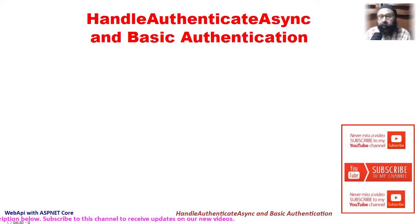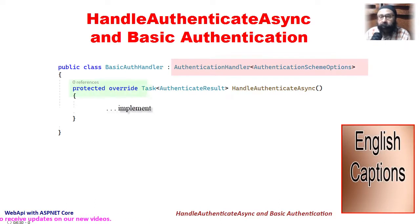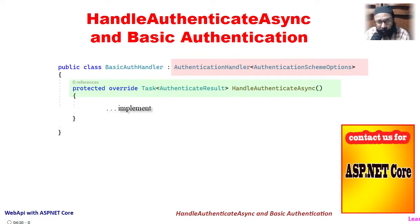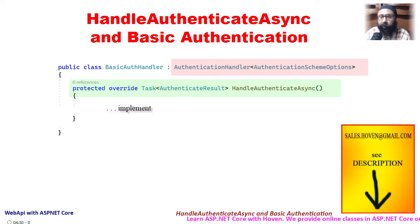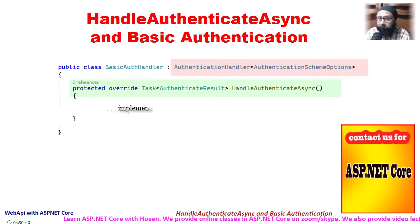The recommended way of implementing a custom authentication scheme is by deriving a class from AuthenticationHandler and implementing the handleAuthenticateAsync function. This makes the code systematic because the authentication and header parsing code now moves to a dedicated class. This approach also allows us to include multiple authentication schemes in the same project.